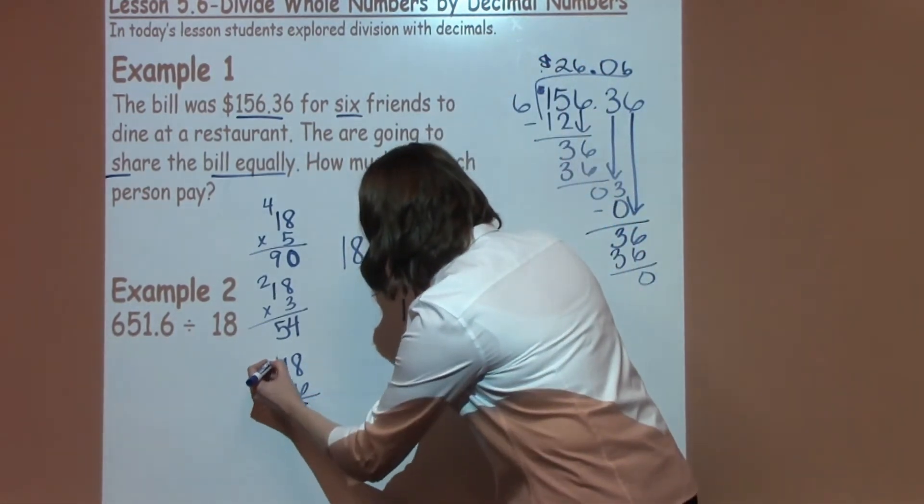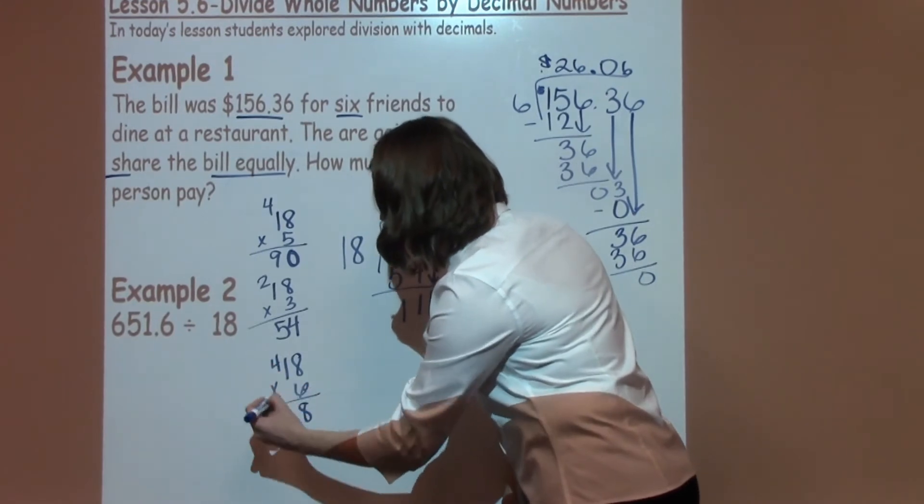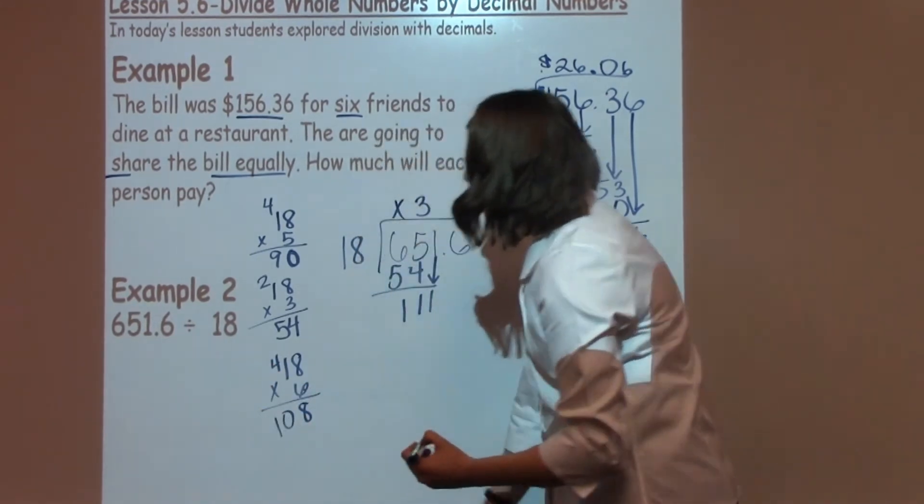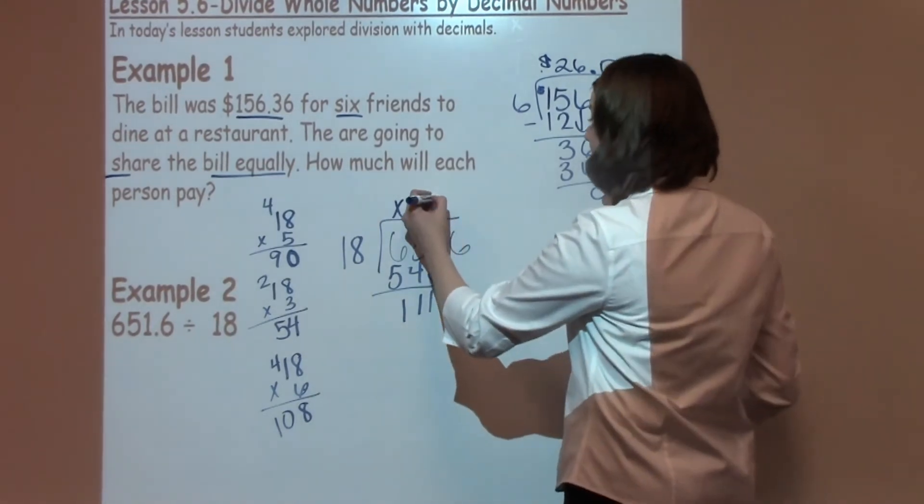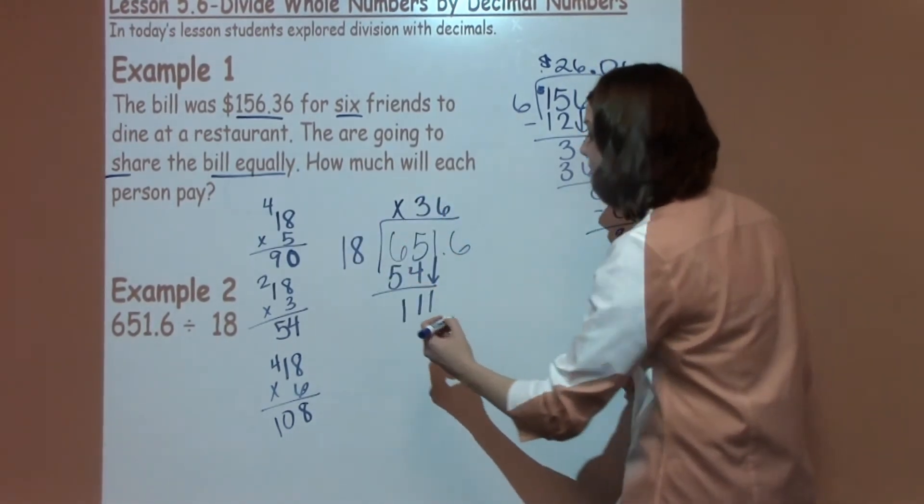Carry my four. One times six, which is six, plus four more, which is a hundred and eight. I know that's very close to a hundred and eleven, so I'm going to use that six. Six times eighteen is one hundred and eight.